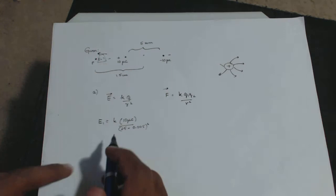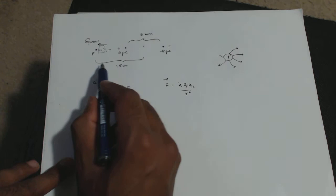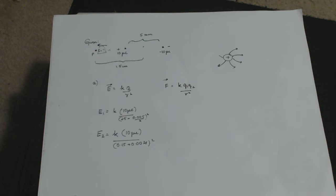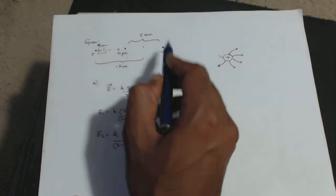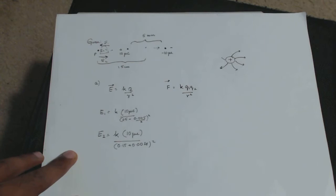E2 = k × (10 microcoulombs) / r₂². The distance from the negative charge to P is 15 cm plus 2.5 mm, which is 0.15 + 0.0025 = 0.1525 m. Because this is a negative charge, the electric field at P points toward the negative charge — so E2 points to the right.